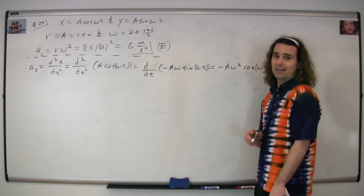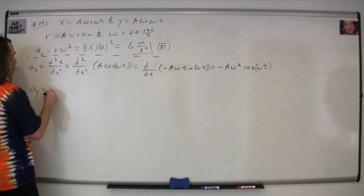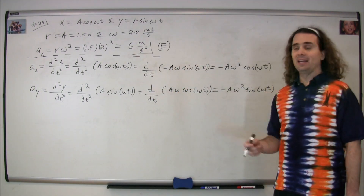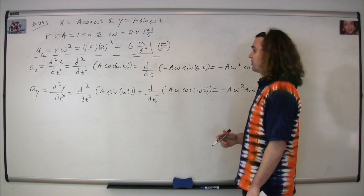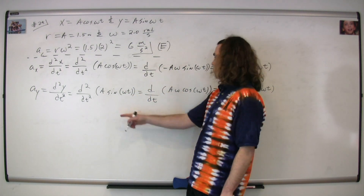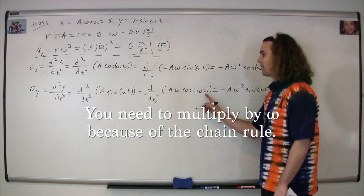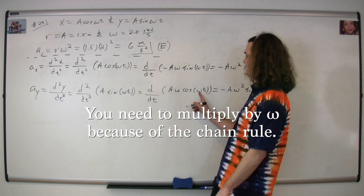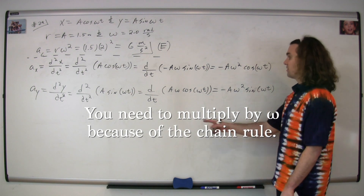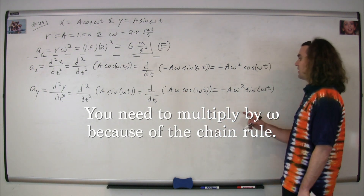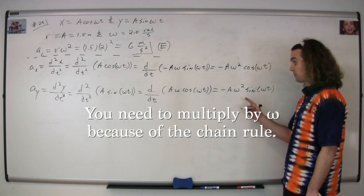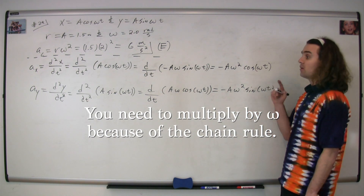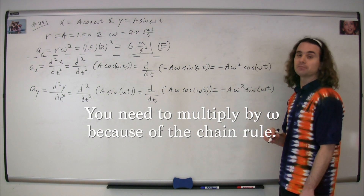We can do the same thing in the y direction. Taking the derivative once, we get a·ω·cosine(ωt), because the derivative of sine is cosine, and we multiply by omega. Then the derivative of cosine is negative sine, and again multiplying by omega, we get negative a·ω²·sine(ωt) for the acceleration in the y direction.